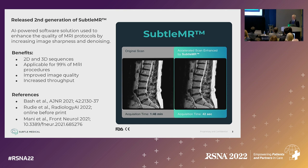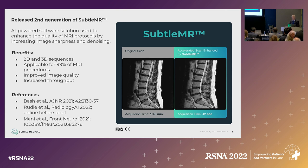SubtleMR is FDA-cleared for 99% of MRI procedures, so it can be used pretty much anywhere in the body. I tend to show neuro examples because I'm a neuroradiologist, but be aware it can be used outside the brain. The goals are improved image quality and improved throughput. I always highlight some references here because one of the things that distinguishes companies is their willingness to publish prospective studies.